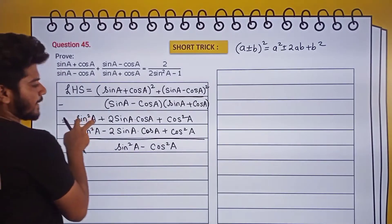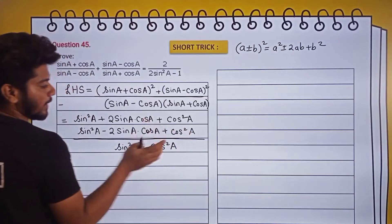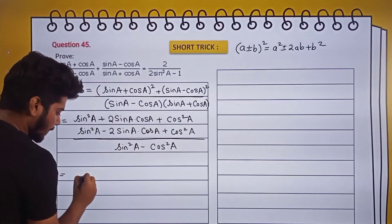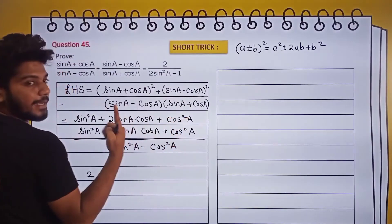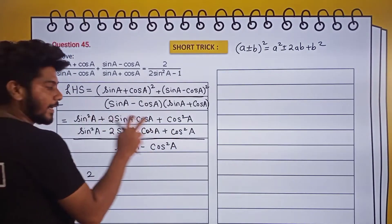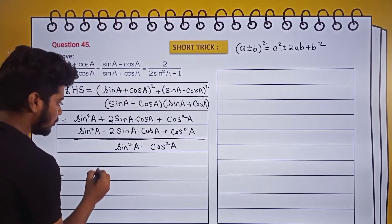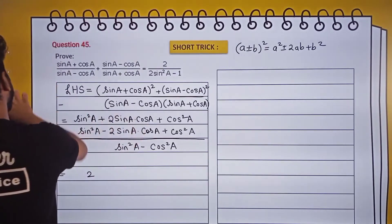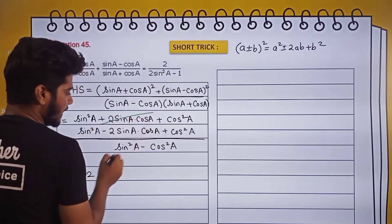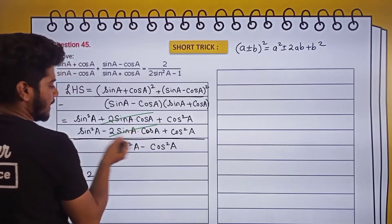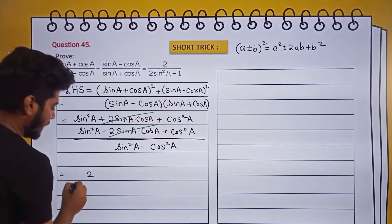Now we apply the identity sin²θ + cos²θ = 1. This sin²A plus this cos²A equals 1, and this sin²A plus this cos²A also equals 1, so 1 + 1 = 2 in the numerator. The +2sinA·cosA and -2sinA·cosA cancel off, leaving us with 2 in the numerator.